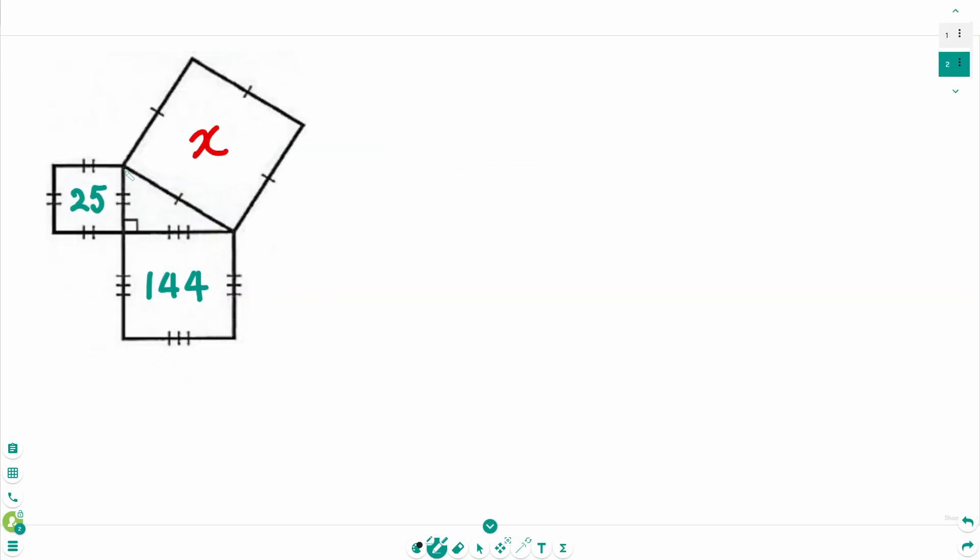The first one: in this triangle, let's say A, B, and C. Using the Pythagorean theorem, A squared plus B squared equals C squared.